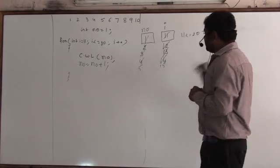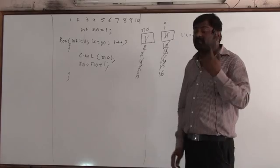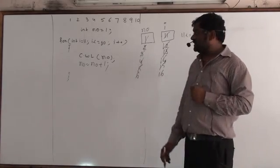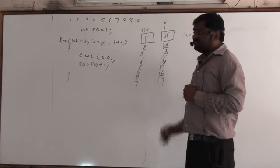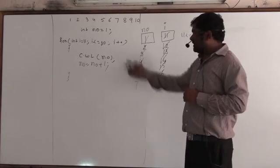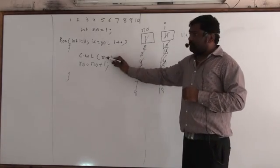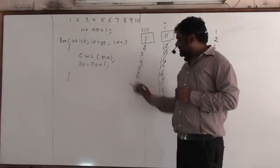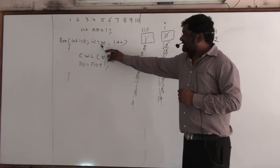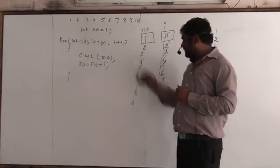Continuing: i is 16 — 6th time rotating the loop. Print 6. Number becomes 7. i is 17 — 7th time. Print 7, increment to 8. i is 18, 19 less than or equals 20 — true. Print 8, number becomes 9. i++ gives i=19. 19 less than or equals 20 — true. Print number: 9. i++ gives i=20. 20 less than or equals 20 — true. Print number, which is 10.